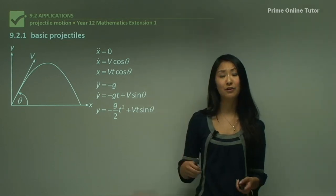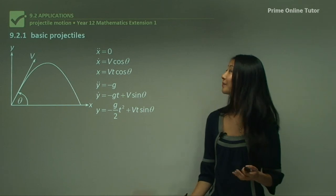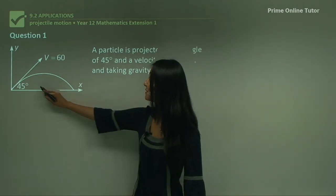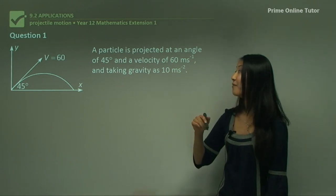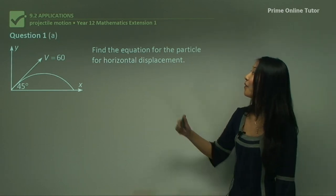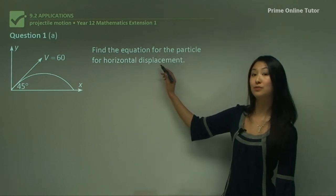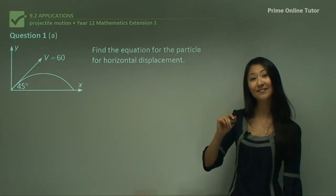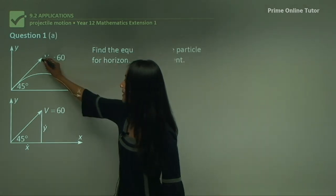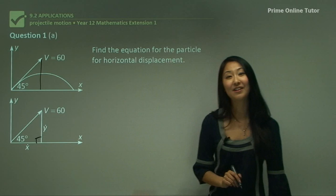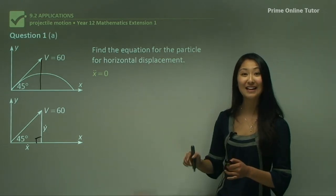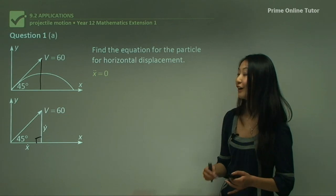Now I'm going to take you through an exam style question with multiple parts. In question one we have a particle projected at an angle of 45 degrees with a velocity of 60, and gravity is 10 m/s². Starting with question 1a, find the equation for the horizontal displacement x. Remember displacement was x, and we can essentially make it into a right-angled triangle — we'll come back to that in a moment.